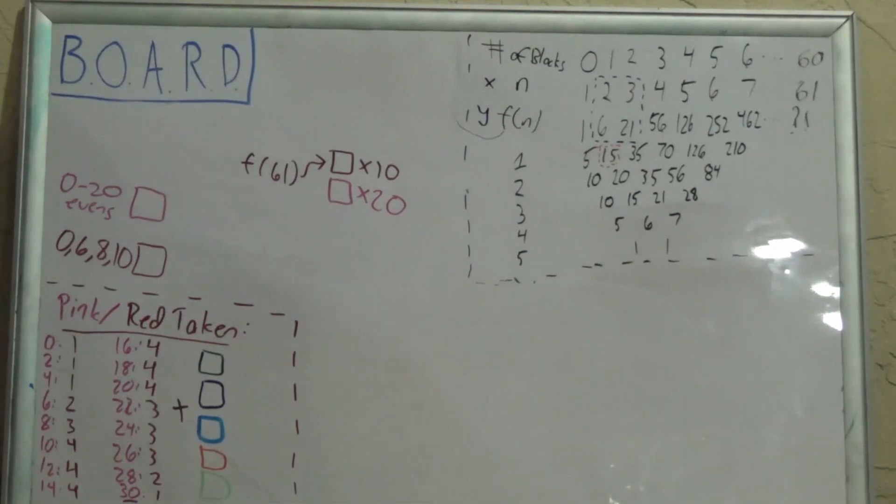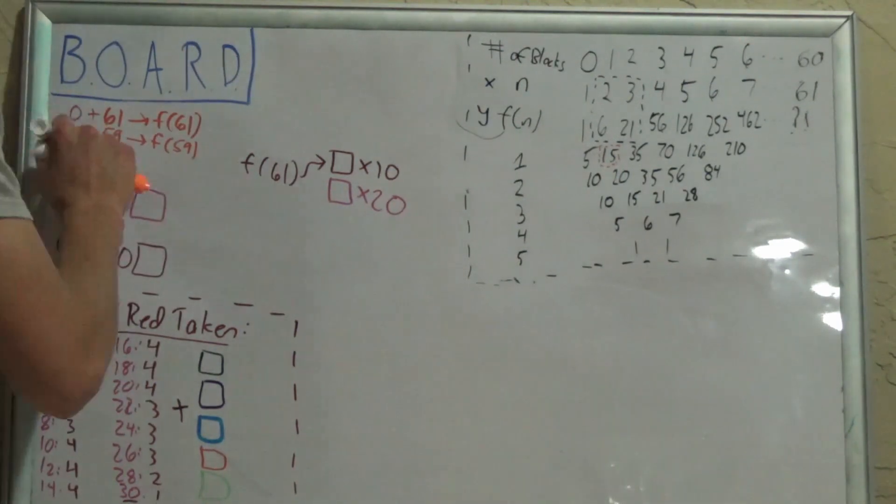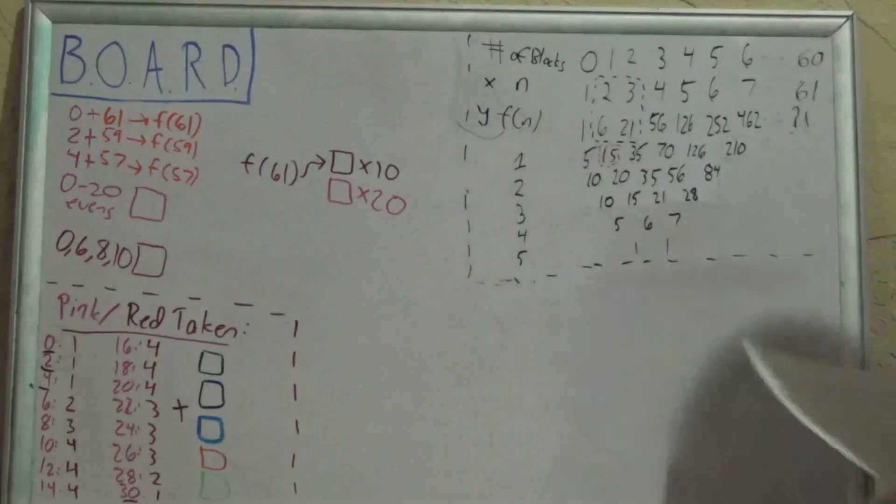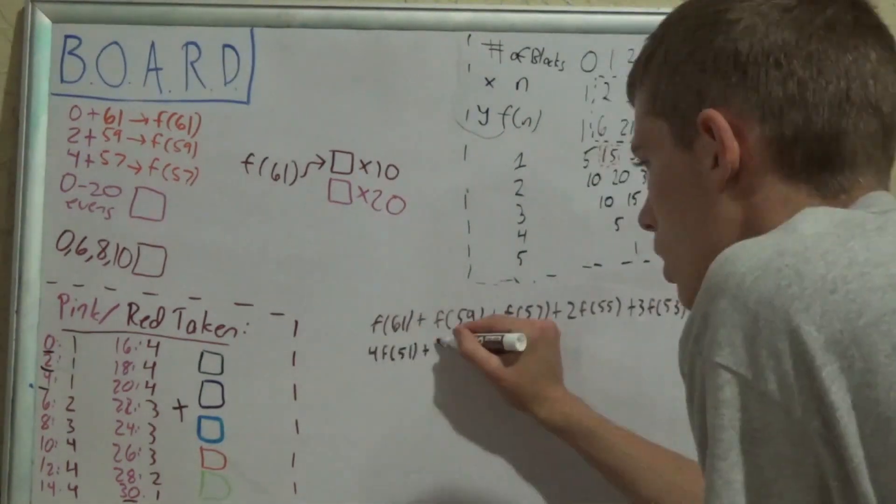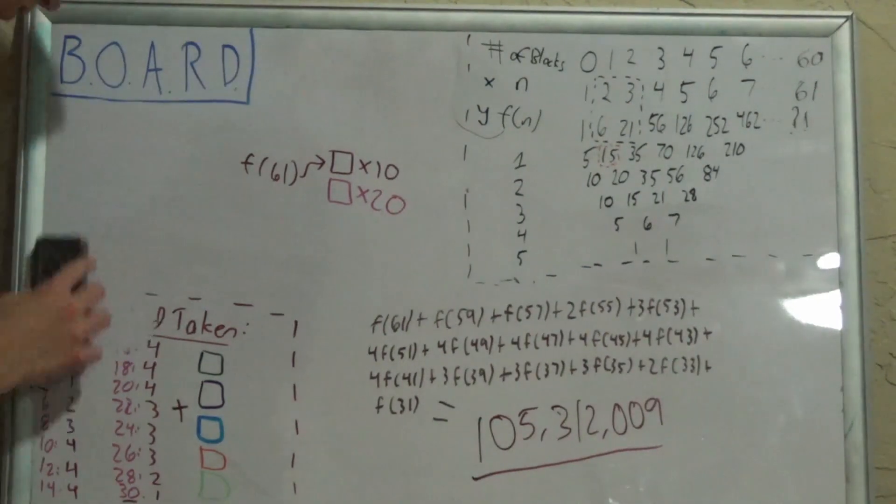Now we must integrate these into the total. If we take away two red or pink blocks, we have 59 blocks left to take away, which means that 58 and under is bad, which correlates to f of 59 combinations. If we take away four, that is f of 57 combinations, and so on. If we add all these values up, we get 105,312,009. But some of you may have noticed.